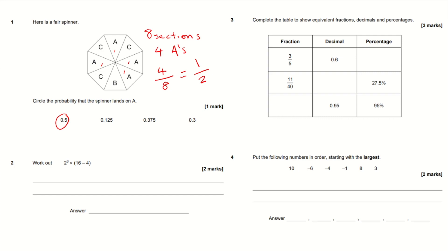Question 2. Work out 2 cubed times 16 minus 4. So 2 cubed and 2 to the power of 3 equals this. So 2 cubed equals 2 times 2 times 2. So 2 times 2 is 4, and 2 times 4 is 8, which equals 8. And the other part of the equation is 16 minus 4 equals 12. So we're left with 8 times 12, and if we know our times tables, that's 96.